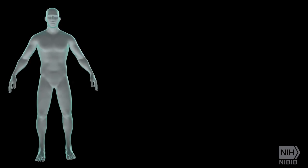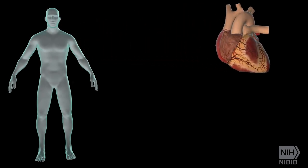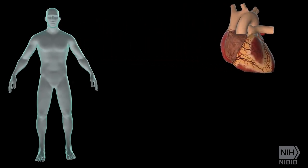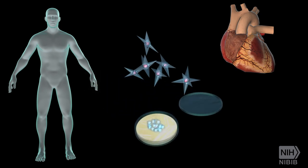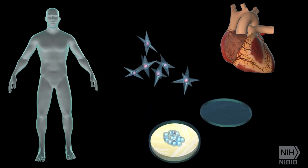The cells can be directly harvested from the target organ, developed from precursor or stem cells, or taken from lines grown in the lab — all ideally from the patient, as that limits problems with rejection.